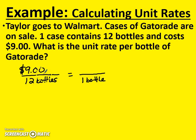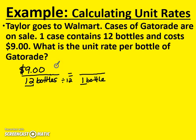Our rules are that we can either multiply or divide by the same amount. What will we have to do to twelve to get to one? We're getting smaller, so we're going to have to divide. Twelve divided by what number is one? Twelve divided by twelve is one. But if we divide the bottles by twelve, we need to divide the price by twelve as well. So nine dollars needs to be divided by twelve.